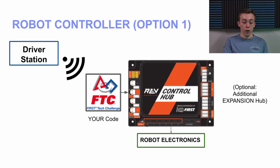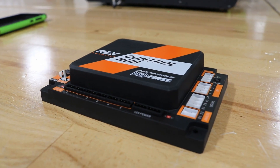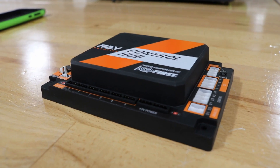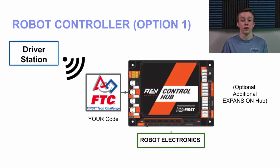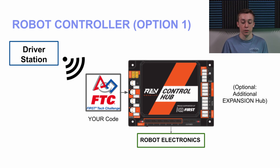Here's the first option for the robot controller — the REV Control Hub. It'll be receiving signals from the driver station via Wi-Fi Direct and your code is running on it. The REV Control Hub is basically a microcontroller that has built-in controllers for DC motors, servos, and sensor inputs, as well as an Android controller. It's basically an Android phone with no screen, packaged into something that can also interface with robot electronics. You can plug in all your robot electronics like motors and sensors, and your code runs on it.